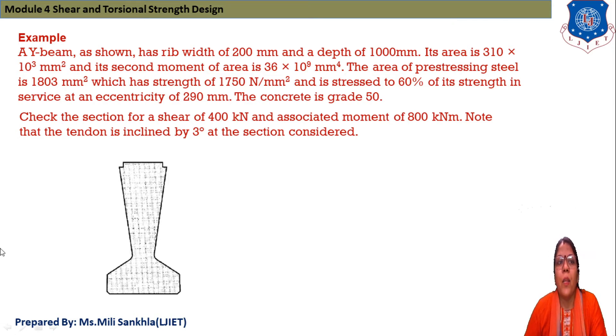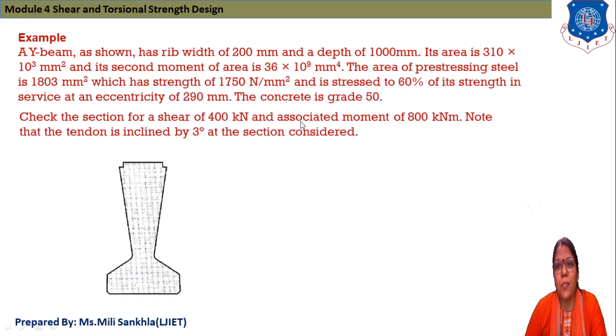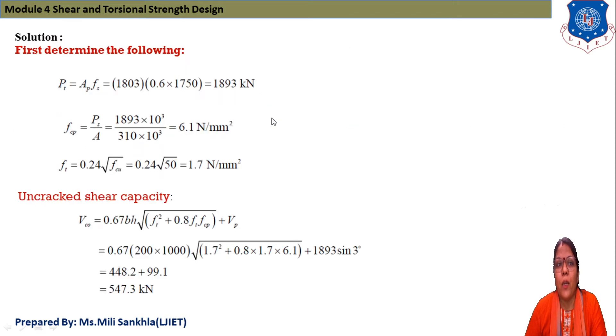Note that tendon is inclined at 3° at the section considered. This is the Y-beam given. Now first determine the following: PT force equals area of prestressing steel into fps. Prestressing steel area is given as 1803 and fps at 60% is given in data.